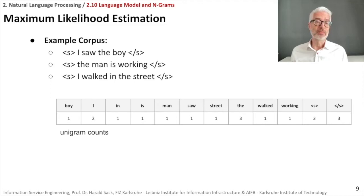First of all, let's have a look again at our corpus: I saw the boy, the man is working, I walked in the street. If I now simply denote all the unigram counts, you see here this little table is created. Also denote that for start and end, which is the beginning and the end of the sentence. Of course we have counts here.